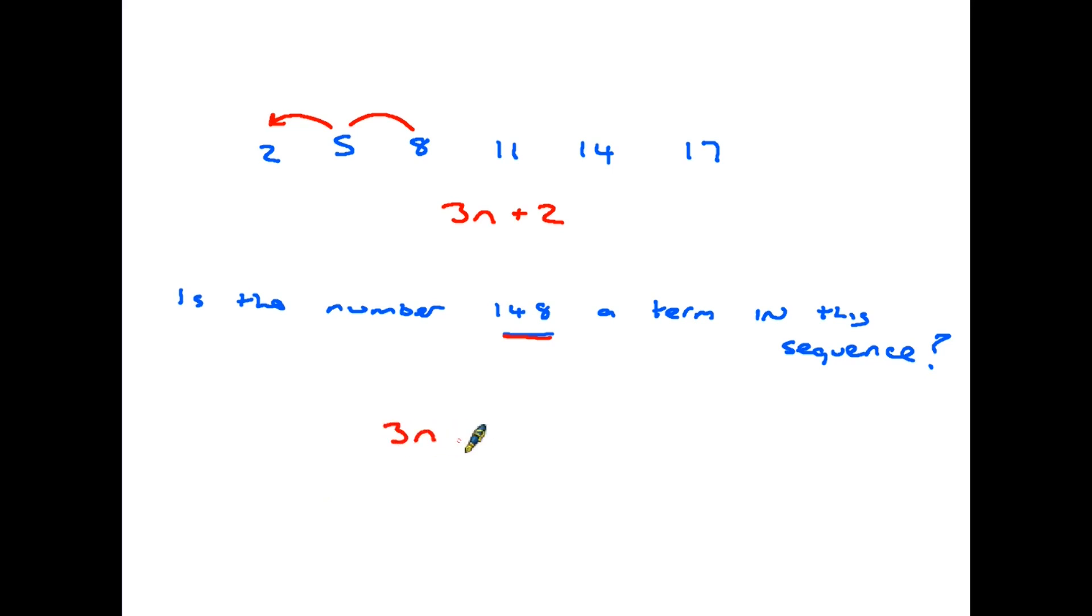Now to find out whether 148 would actually appear in this sequence we turn it into a little equation. We say okay if number 148 is in the sequence then 3n plus 2 would actually equal 148 at that point and we work this out as an equation and the simple rule is if we end up with a full number, a whole number, an integer, then the answer would be yes. If we end up with a decimal number the answer is no. So let's move this round: 3n equals 148 minus 2, so 3n equals 146. Therefore n equals 146 divided by 3. Now in this case our answer is 48.66 recurring. It is not an integer, it is not a whole number, therefore your answer would be no, 146 does not appear in this sequence.